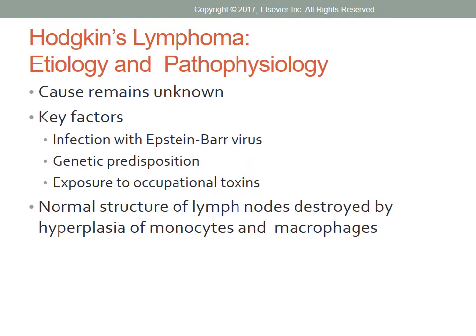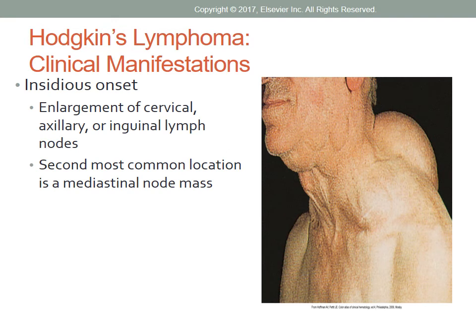The risk of having Hodgkin's lymphoma increases with HIV infection. A normal lymph node is usually composed of connective tissue surrounding a fine mesh of reticular fibers and cells. In Hodgkin's lymphoma, the normal structure of the lymph node is destroyed by overgrowth or hyperplasia of monocytes and macrophages. The main diagnostic feature is the presence of Reed-Sternberg cells in lymph node biopsy specimens. Hodgkin's lymphoma has an insidious onset; in the initial stage, the cervical, axillary, or inguinal lymph nodes become enlarged, and a mediastinal node mass is the second most common location.